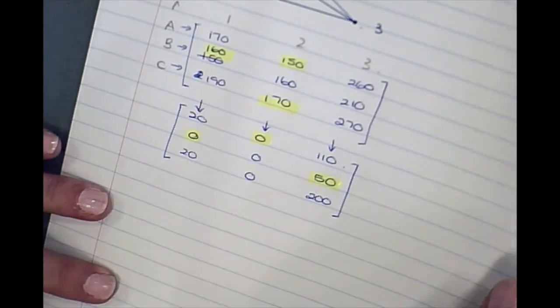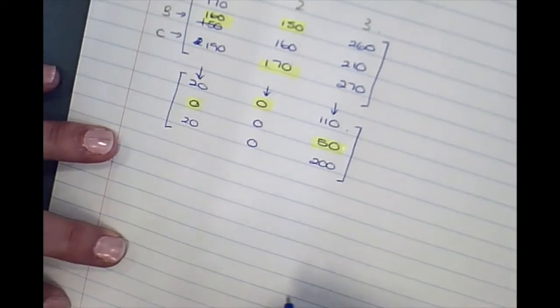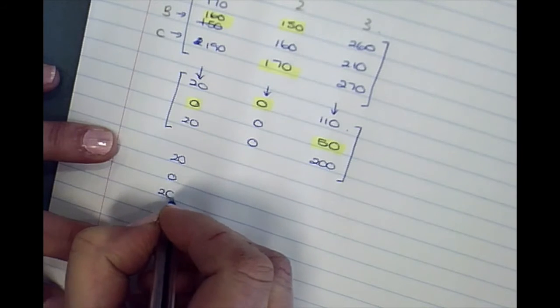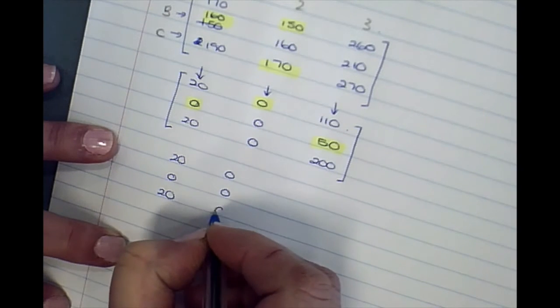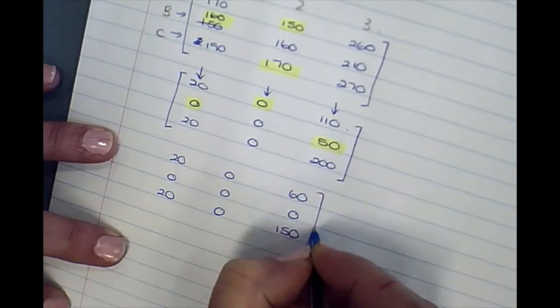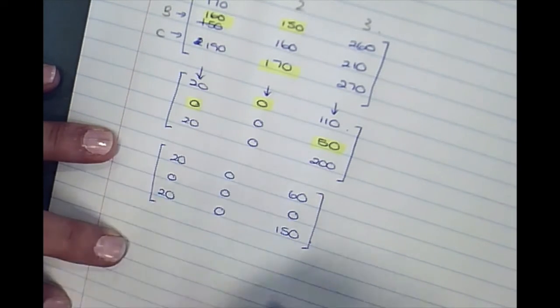Step number three: you're working in the columns. In each column identify the smallest number, subtract that number from each number in the column. So here this remains unchanged, this remains unchanged, 60, zero. Draw lines.